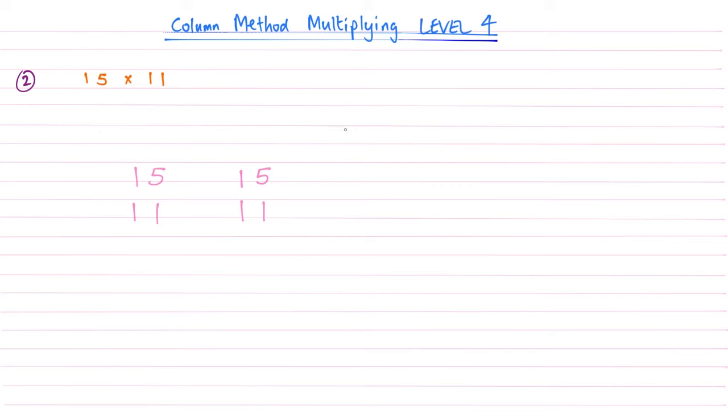So look at example number 2. Very similar to example number 1, but this time we're going to do 15 times 11. So at first stage, write out your method. So 15 over 11 times sign. Draw your line. So we've lined those up in terms of place value.